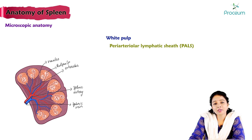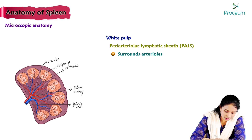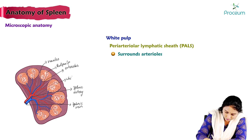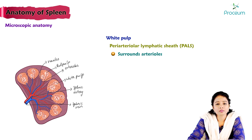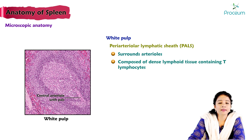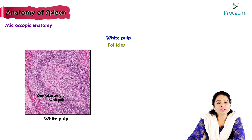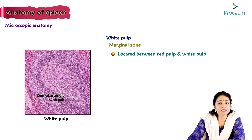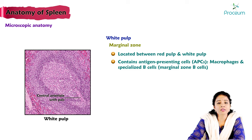White pulp: the periarteriolar lymphatic sheath (PALS) constitutes the white pulp, which surrounds the arterioles. It is composed of dense lymphoid tissue mainly containing T lymphocyte follicles. The main components of white pulp are the lymphatic follicles, which are in close association with arterioles and contain B lymphocytes. The marginal zone is located between the red pulp and white pulp, and contains antigen-presenting cells such as macrophages and specialized marginal zone B cells.